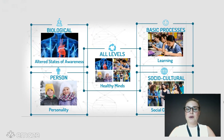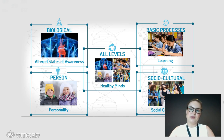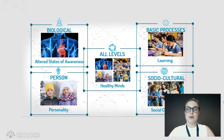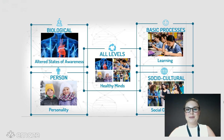By the end of this video you should have a solid understanding of each of the four levels, which is important because each ties to a different topic we'll study this year. For the biological level we'll study altered states of awareness, sleep, stress and physiological arousal. For basic processes we'll study how people learn. For the person level we'll look at theories of personality, and for the socio-cultural level we'll look at social cognition. Our final topic — healthy minds — integrates all four levels. That's it for this video, see you for the next one!